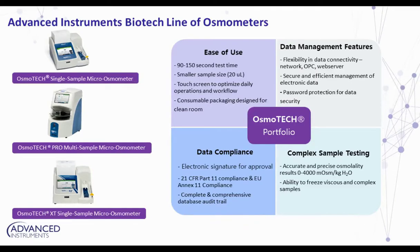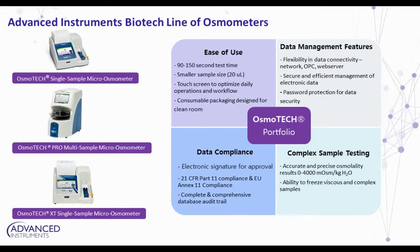With the Osmotech XT, we can now test even more sample types. Samples that may have previously been more of an issue with our technology now show the same performance and robustness as we'd expect from any AI instrument. With the XT, you can run up to 4,000 milliosmoles per kilogram, and you have the ability to freeze more viscous and complex samples. Tara, since you are a user of Advanced Instruments, could you speak for a moment to the robustness and reliability of the instrument?